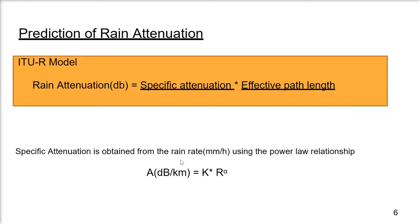This is a very simple formula by ITU, International Telecommunication Union. The attenuation is computed in terms of decibel or dB per km. Specific attenuation is obtained from the rain rate. Rain rate is simply the rain in millimeters per hour.